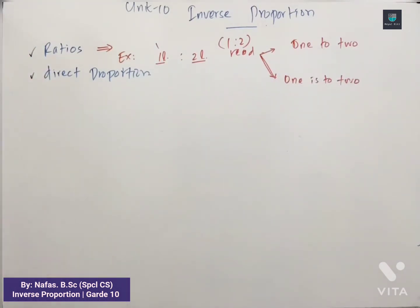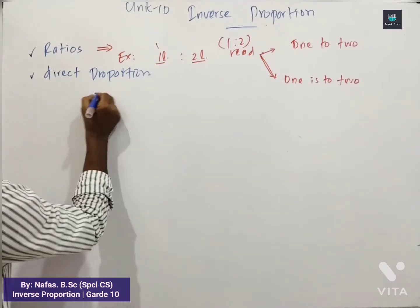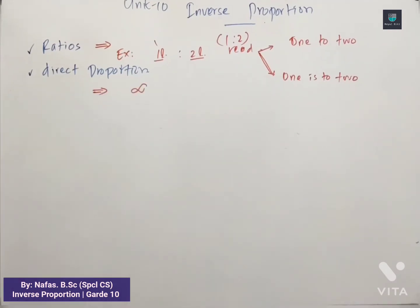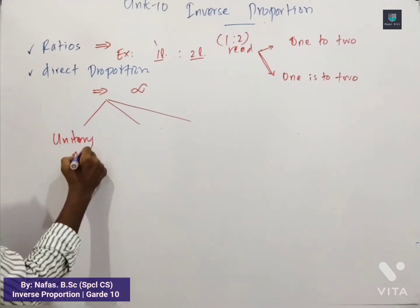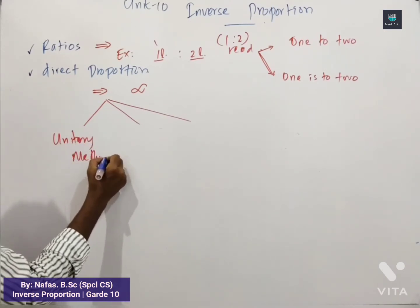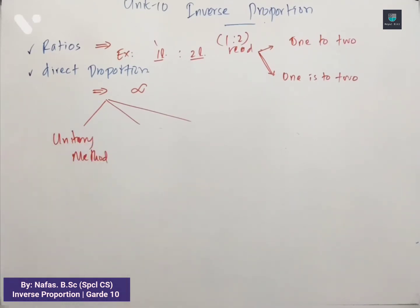So that is under the ratio. Again Direct Proportions. Under Direct Proportions you study three ways of solving the Proportions. First, Unitary method. What is Unitary method?